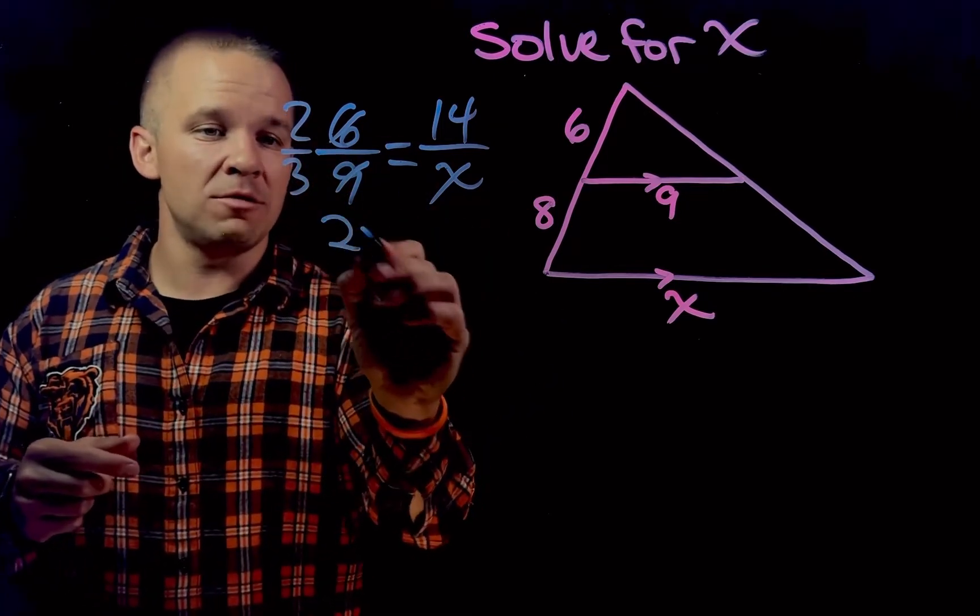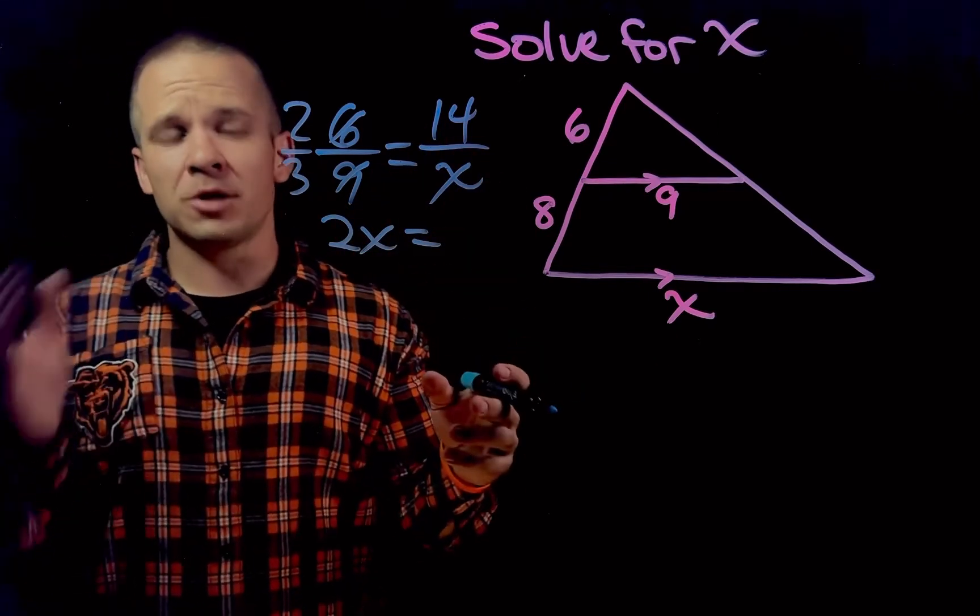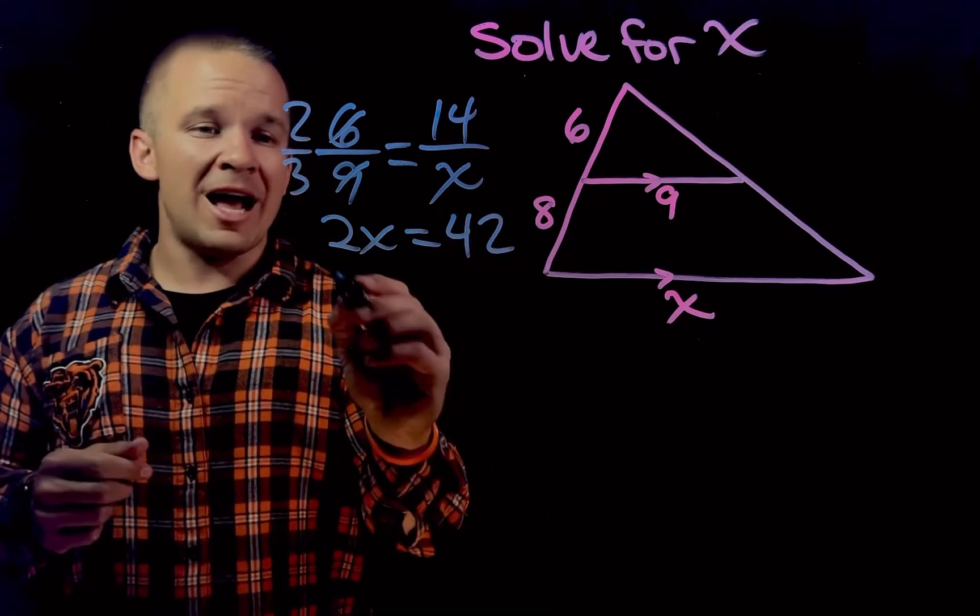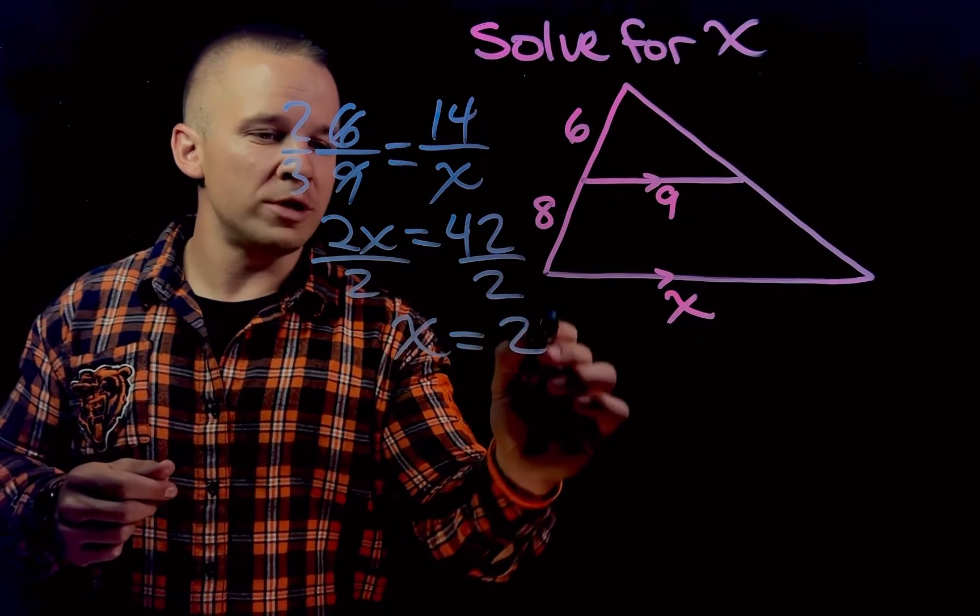I've got 2 times X, that's going to be 2X, equals 3 times 14. While 3 times 10 is 30, 3 times 4 is 12, so it's going to be 42. And then I can go ahead and divide by 2 to solve for X, and I'll get X equals 21.